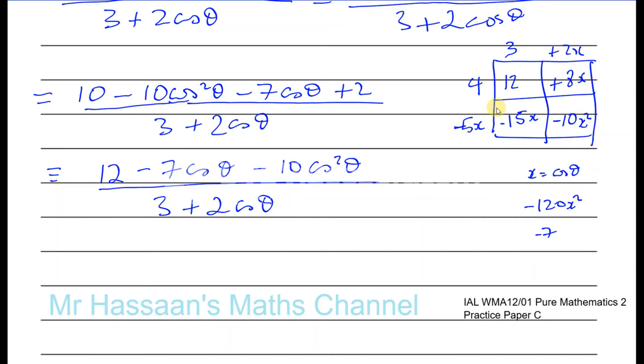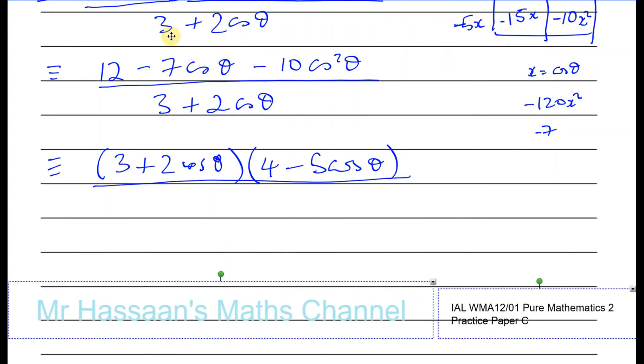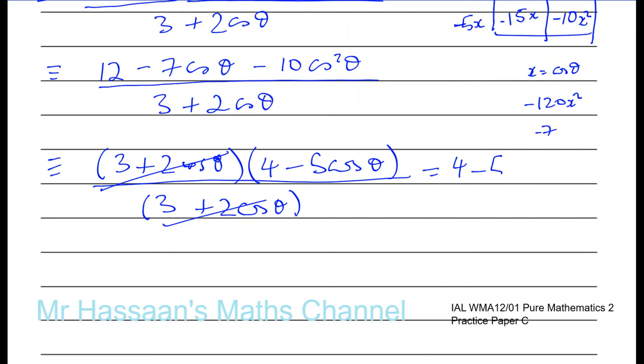So we end up with getting this. So instead of x I'm going to write cosθ. So I've got 3 + 2cosθ, as I suspected, 3 + 2cosθ, and 4 - 5cosθ over 3 + 2cosθ. And what happens here, they cancel out and you're left with 4 - 5cosθ.